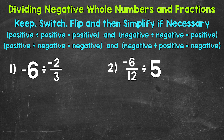Starting with number one, where we have negative six divided by negative two thirds. So a negative divided by a negative, we are going to have a positive result here. Let's keep switch flip — we're going to rewrite the problem using those steps. Always keep your first number or fraction, so negative six, and I'm going to write this in fractional form by putting it over one, so we have a numerator and a denominator.